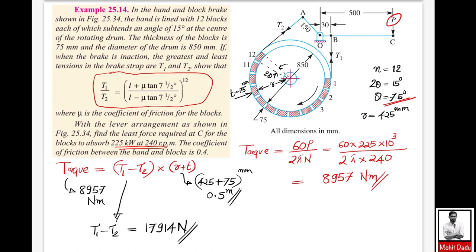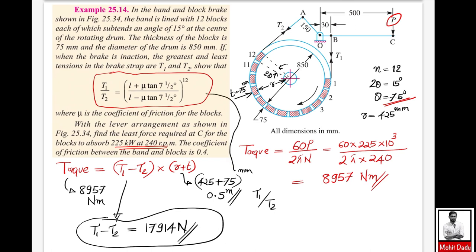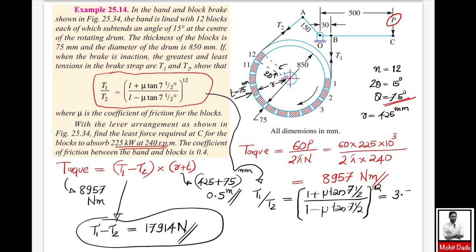Now we have two equations: T1 − T2 = 17914 N, and T1/T2 = [(1 + mu tan 7.5°) / (1 − mu tan 7.5°)] raised to the power 12, which evaluates to 3.55. Solving these two equations simultaneously gives T1 = 24920 N and T2 = 7020 N.